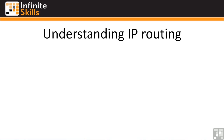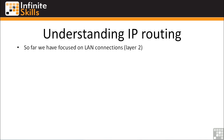So far, up to this point in the ICND1 course, we have focused on LAN connections, which are all Layer 2 connections. I send a frame out on Layer 2, it has a source and destination MAC address. The switch knows which MAC address is which and sends it out the correct port. Pretty simple, pretty straightforward.